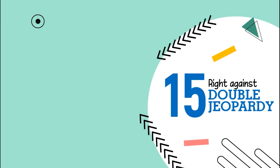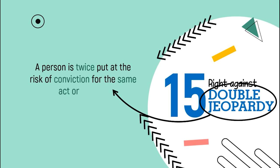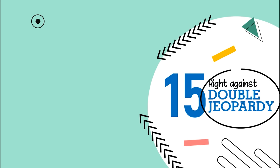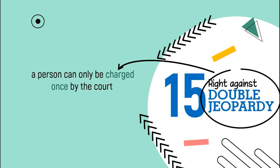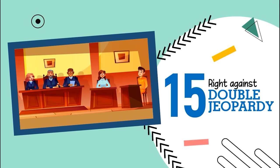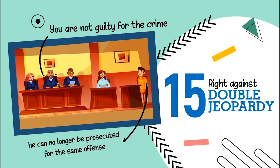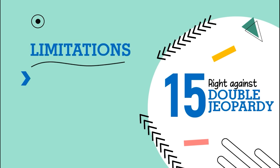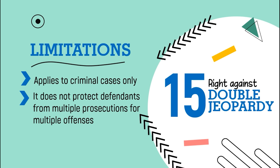Last, the right against double jeopardy. Double jeopardy means that a person is twice put at risk of conviction for the same act or offense. The right against double jeopardy means a person can only be charged once by the court. For example, if a person has been charged with murder and the court found him not guilty, he can no longer be prosecuted for the same act or offense and can invoke his right against double jeopardy. However, there are limitations: double jeopardy applies to criminal cases only, and it does not protect the defendant from multiple prosecutions for multiple offenses — for example, a person acquitted of murder could still be tried for different offenses.